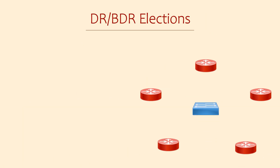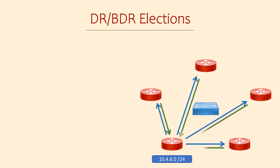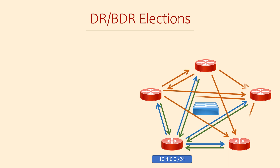Let's think about a problem that could occur on a broadcast network, and then we'll see how OSPF solves this. When a router adds a new network, it floods an LSA to its neighbors — this is how it advertises this network. The neighbors would then request more information with an LSR message. Once they learn the new route, they would tell their neighbors and so on. That's a lot of messages flying back and forth. Imagine how bad it would be if there were 20 or 30 routers here — this many messages has the potential to impact the performance of the network.